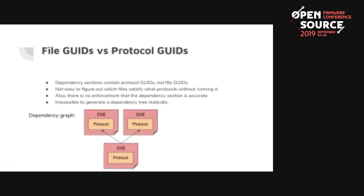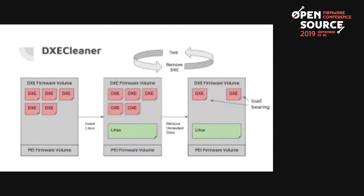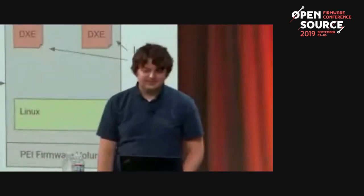So we made a tool called DXE Cleaner. It combines Fiano's static analysis with actually running the firmware on the machine. You remove a single DXE, try booting it on the machine, run some tests — if those tests pass, that DXE is not load-bearing and you can delete it; if they fail, you keep it. You repeat this for each DXE, then do another pass in case you deleted a DXE that another depended on. The algorithm is essentially N-squared, but usually on the first pass it deletes about half the DXEs, and typically you don't need more than one pass.